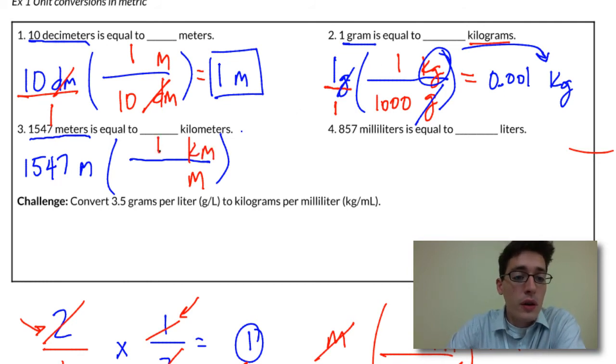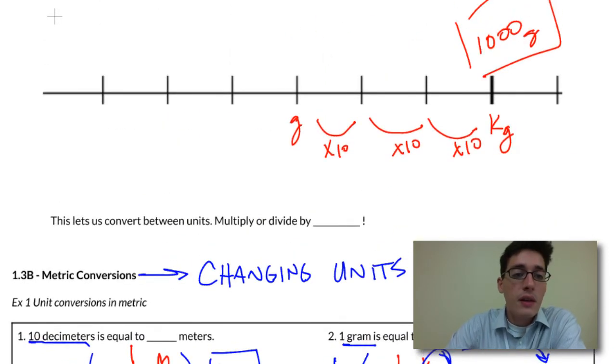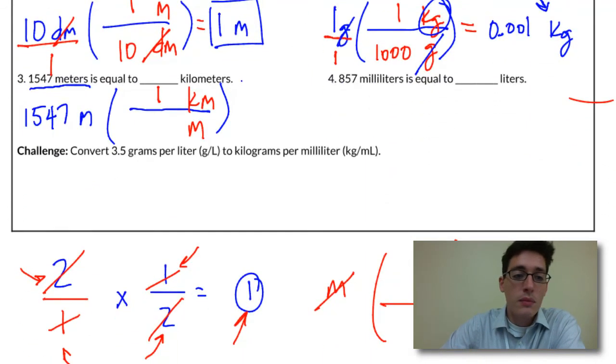And then back to the number line, it's the same thing. Remember these prefixes? They just tell us what point we're at. So if I change this to meters, a kilometer is still three steps away. So we're looking at 1,000 meters. So 1,547 divided by 1,000 gives us 1.547 kilometers.